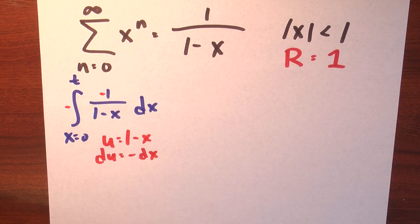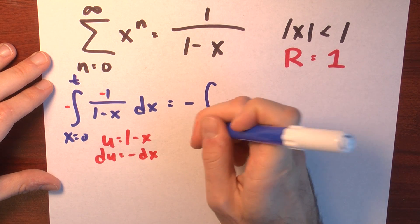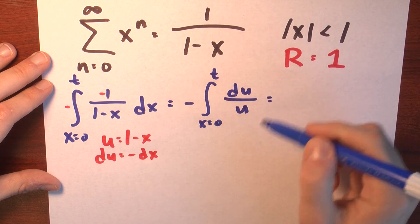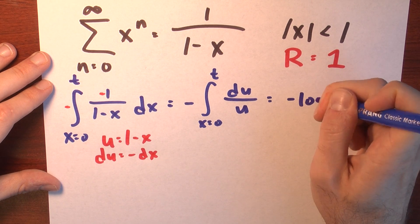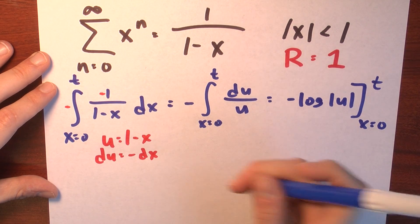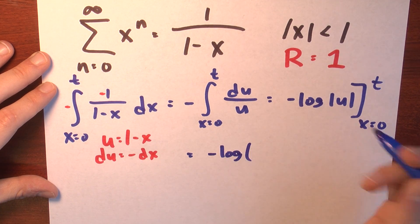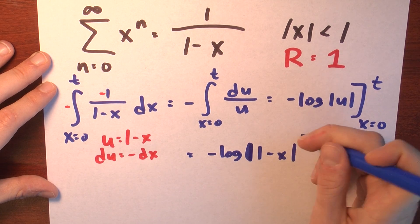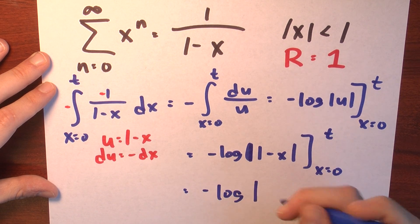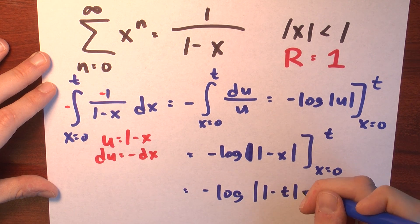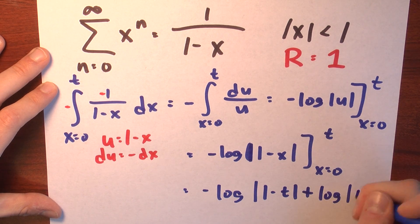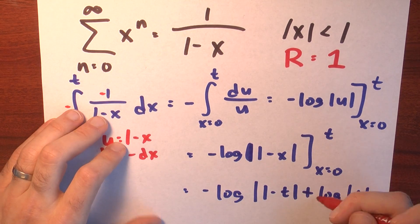Now I've got a negative dx there. So this is negative the integral as x goes from 0 to t — I just have du over 1 minus x, but that's u. So I want to anti-differentiate 1 over u. That is negative log of the absolute value of u, evaluated at x equals t and x equals 0. Taking the difference, that's negative log of the absolute value of 1 minus t, and then we add the log of the absolute value of 1 minus 0. But log of 1 is just 0, so we don't need to include that term.